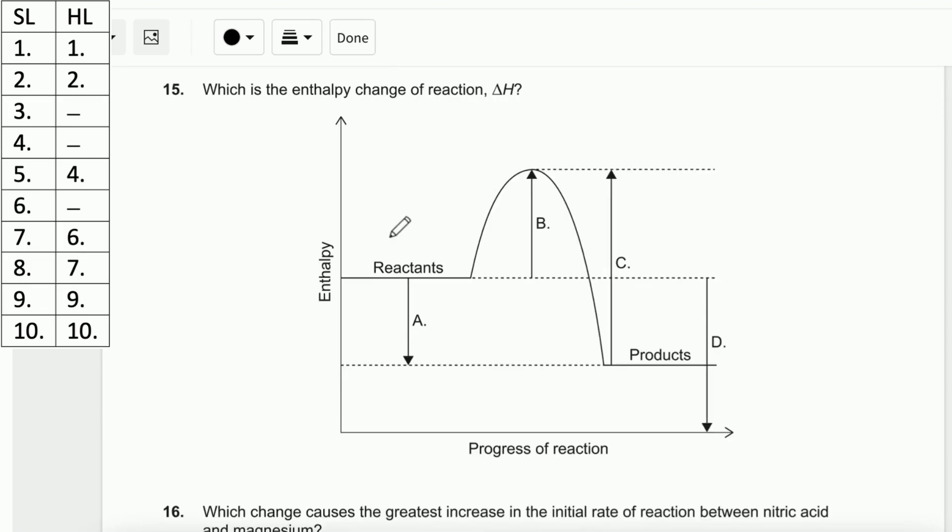Number 15. Which is the enthalpy change of reaction ΔH? B is the activation energy. A is ΔH, which is negative, so it's exothermic. The answer is A.